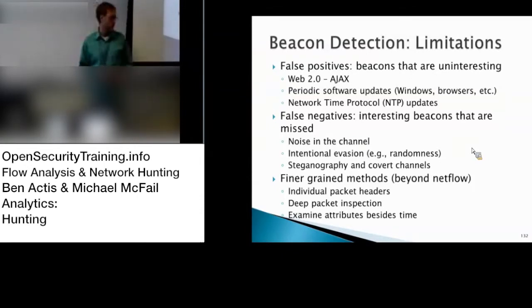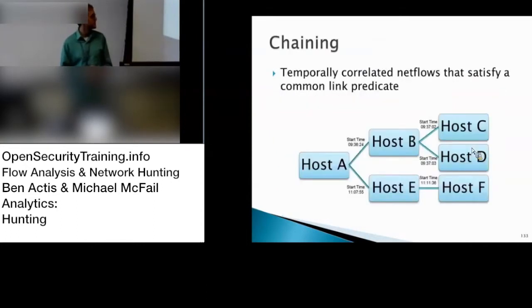I mentioned this with respect to the beaconing, but it's also relevant to a lot of the other elements. There are finer grained things you can do beyond NetFlow. You can look at individual packet headers. NetFlow is just an aggregation, it's a summary. It doesn't give you individual packet headers. You can look at time series information there. Certainly deep packet inspection, looking at actual content, drilling down in your beacon. And then, I've been talking about beaconing as time-based, but you can look at things beyond time. You can look at sizes, you can look at flags, those kinds of things.